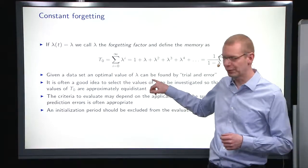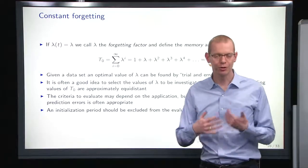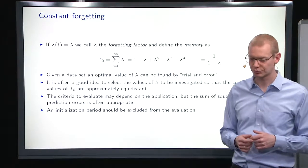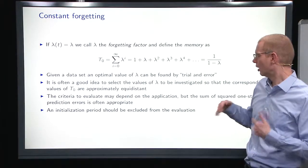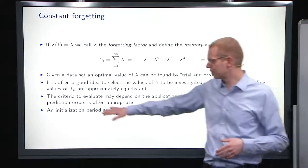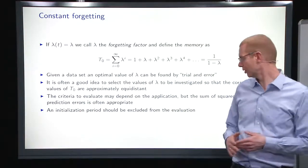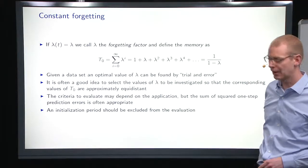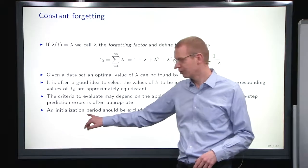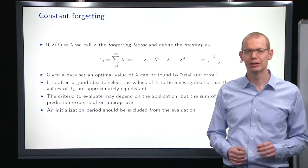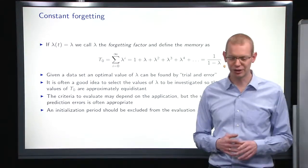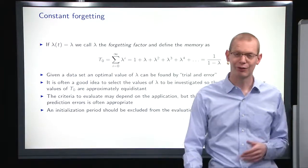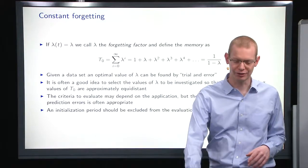And how to find the optimal lambda is basically you can do trial and error, but you can also optimize to find the value of lambda that minimizes the objective function. So of course, then you should figure out which criteria to evaluate. Most typically, what you look at is the sum of squared one step prediction errors. And then, as mentioned earlier on, when trying to do optimization, it's very important that you skip an initialization period to make sure that you don't get any influence from those initial observations that are just noise.